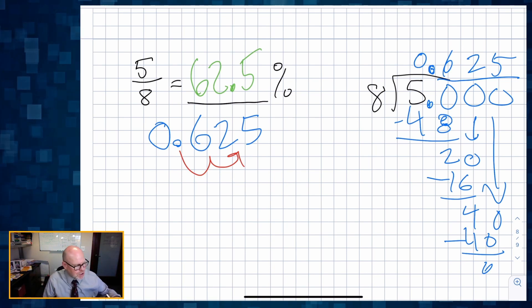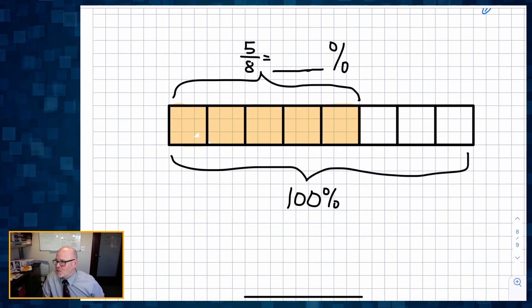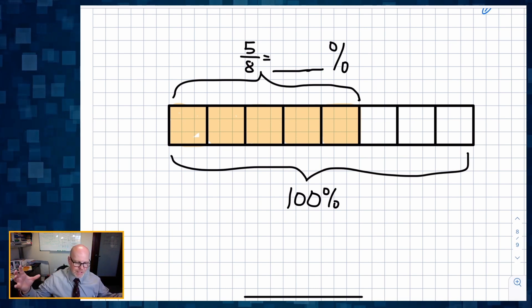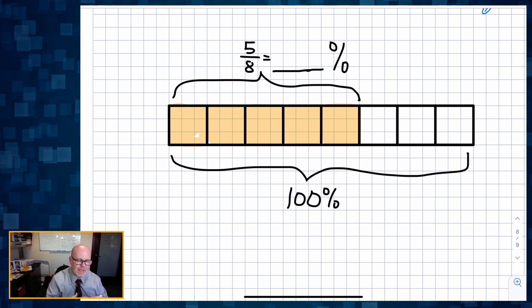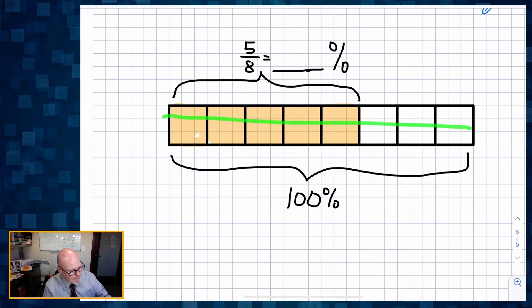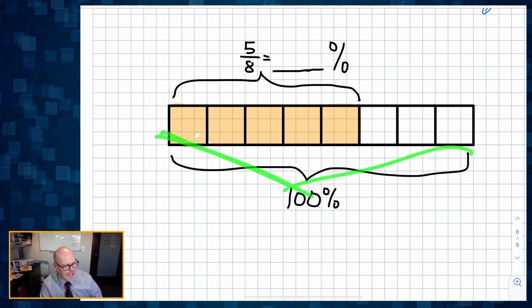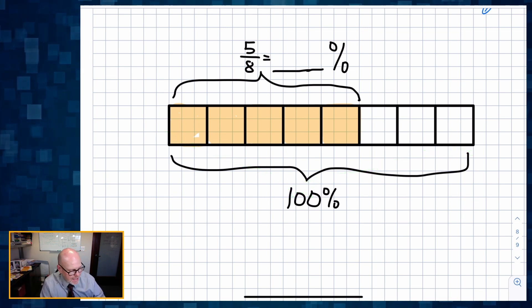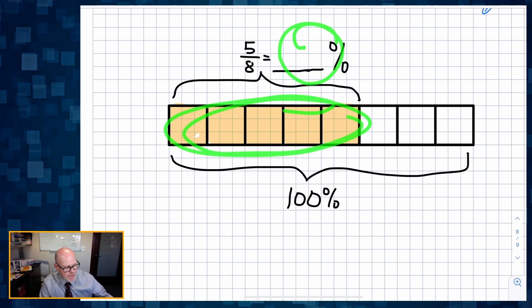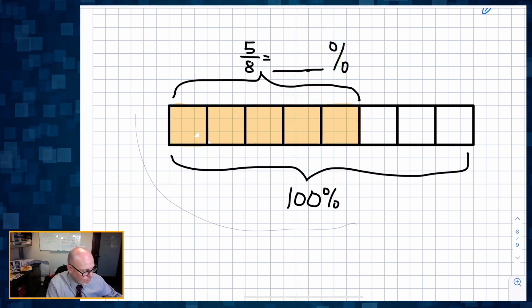So what I'm going to do is I'm going to show you a nice visual representation. Here it is. My visual representation is I'm going to give students a tape diagram cut into eighths. I'm going to tell them that this diagram, the entirety of the diagram represents 100%. Given that piece of information that the entire tape represents 100%, I want to know what percent is these five pieces? What percent do these five pieces represent?